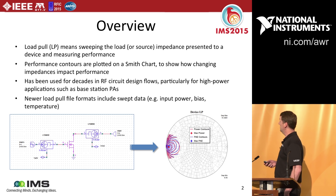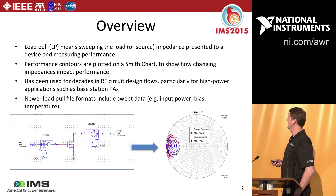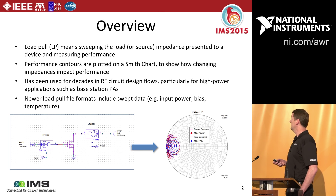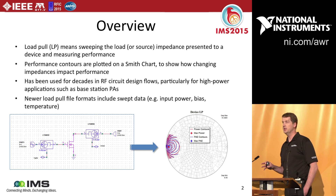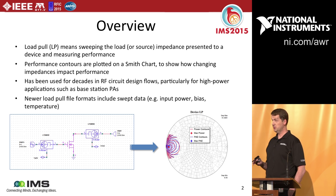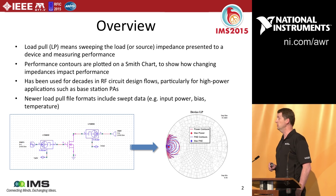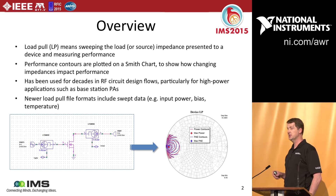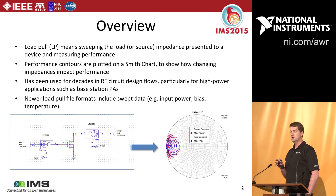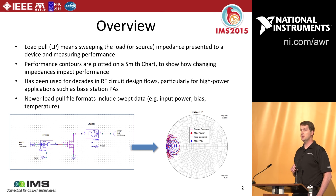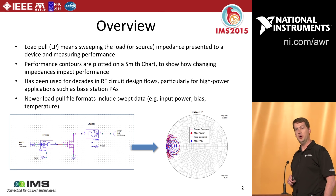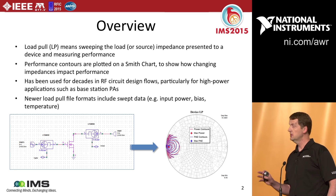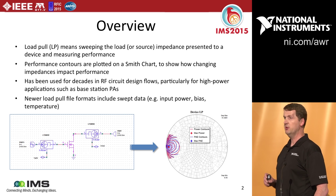Newer load pull file formats include swept data — for instance, input power, temperature, and bias. What we see in the industry right now is people sweeping predominantly input power. When we architected the latest version of our software, we did that with an emphasis on input power sweeps — where you can sweep anything you want, anything can be a swept variable, but keep in mind that input power is what we see in the industry right now.